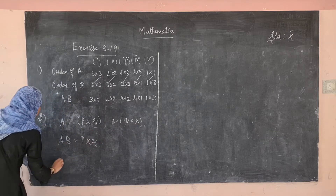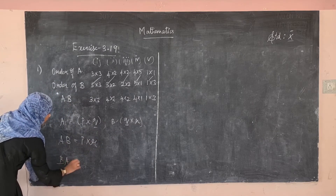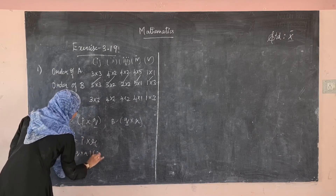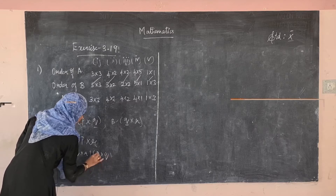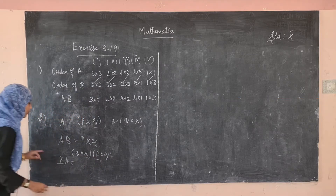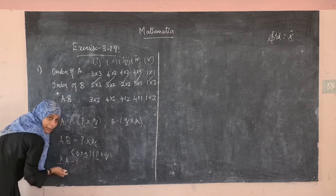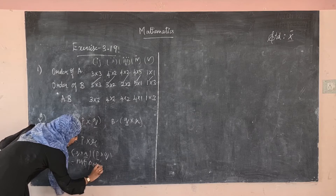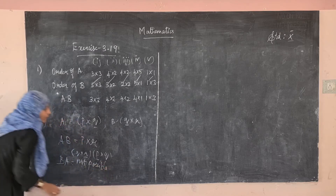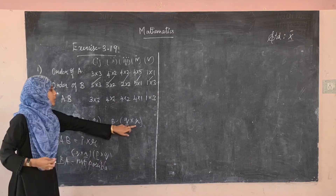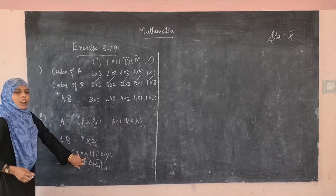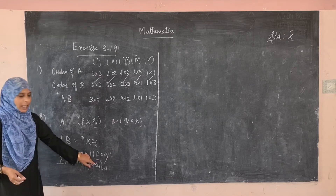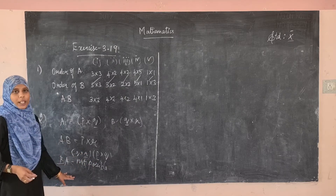For B×A: B is Q×R and A is P×Q. These two inner elements are not the same — R ≠ P. Therefore B×A is not possible. The reason is that the number of columns in B is not equal to the number of rows in A, so the multiplication of B into A is not possible.